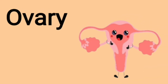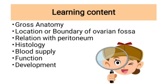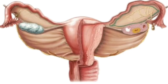Today's discussion topic is the ovary, an important female internal reproductive organ. Our learning content covers gross anatomy, location and boundaries of the ovary and ovarian fossa, relation with peritoneum, histology, blood supply, function, and development.